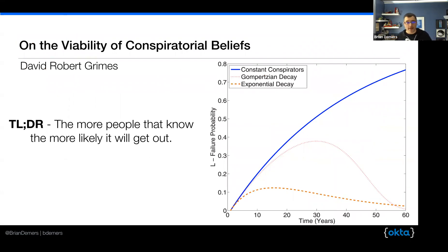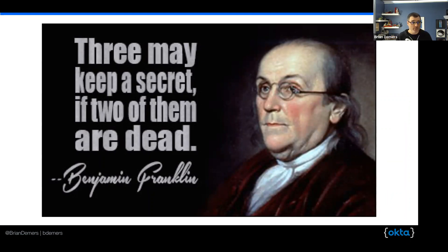There's also this great paper. David Robert Grimes wrote a paper called 'The Viability of Conspiratorial Beliefs.' He's actually trying to create a mathematical model to disprove things like the moon landing hoax conspiracy — showing that the likelihood of that being a hoax is obviously very low. The TLDR here is the longer you wait, the more likely it is your secret will get out. And if anyone's heard this quote from Benjamin Franklin, he puts it a little more succinctly: 'Three people may keep a secret, if two of them are dead.' Think about how fast information travels today — we're seeing firsthand how digital information spreads.